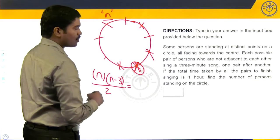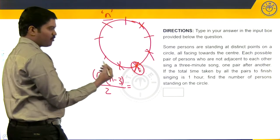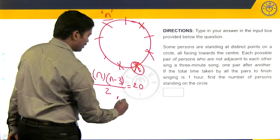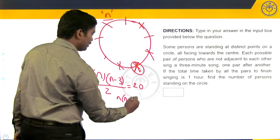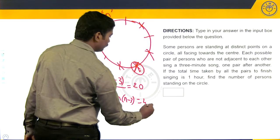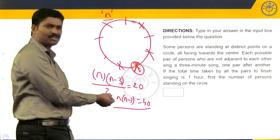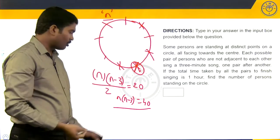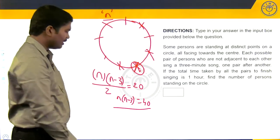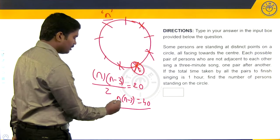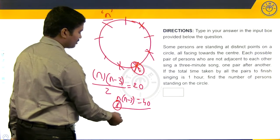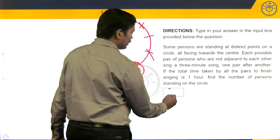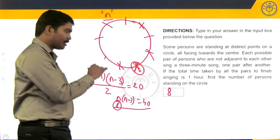This is equal to the number of persons, the number of pairs which sang 20 pairs. So, n into n minus three will be 40. Now, without even having to solve this quadratic equation, n square minus three n minus 40 equal to zero, we can very easily see n is equal to eight. Eight into eight minus three, five, is equal to 40. So, find the number of persons standing on the circle. There are eight persons standing on the circle.